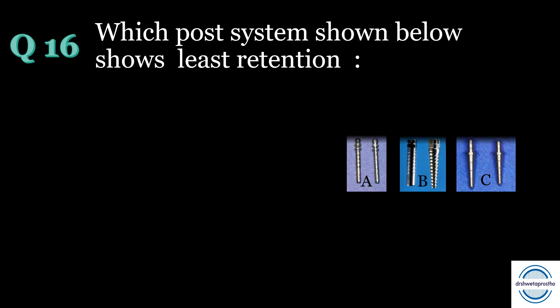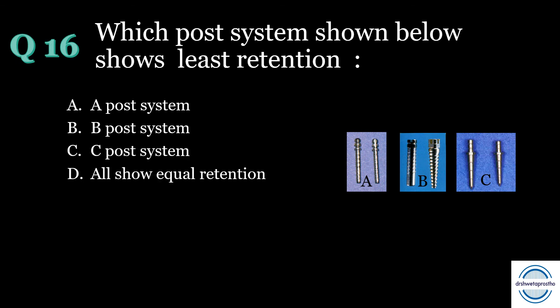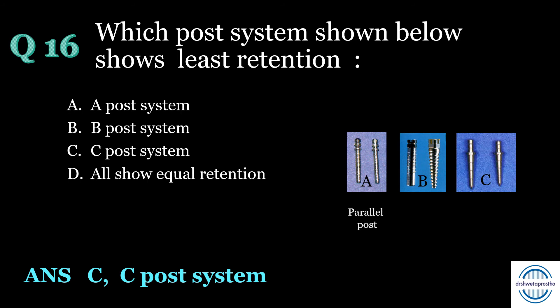Question number sixteen: Which post system shown below has the least retention? A) A post system, B) B post system, C) C post system, or D) all show equal retention? The answer is C — the C post system, which is the tapered post system. A is the parallel post system, B is the threaded or active post system, and C is the tapered post system. The tapered post has the least retention, while the active or threaded post — B — shows the maximum retention.